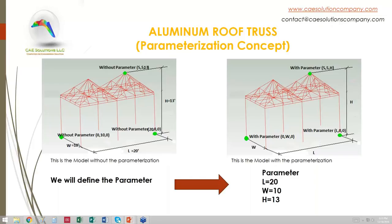This is the first model — an aluminum roof truss — for the demonstration of the parametrization concept built into CivilFEM. On the left, we have the model as it appears in a screenshot of CivilFEM. The lower-left value W is 10 feet, which is half the overall width; the overall width of the structure is 20 feet. The height of the apex, the highest point, is 13 feet.